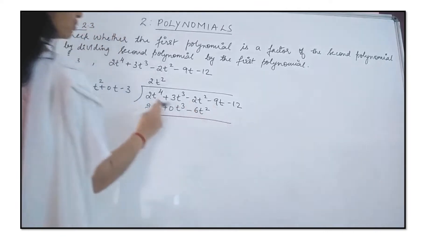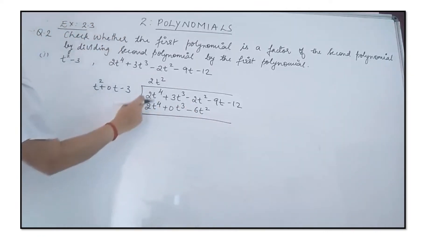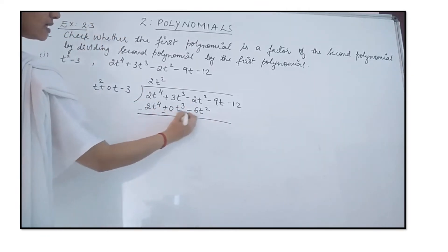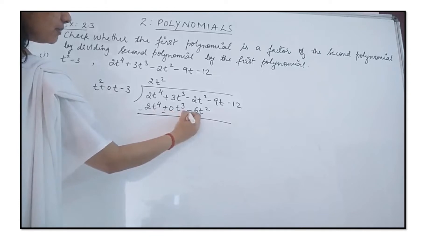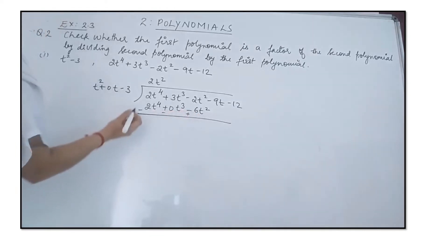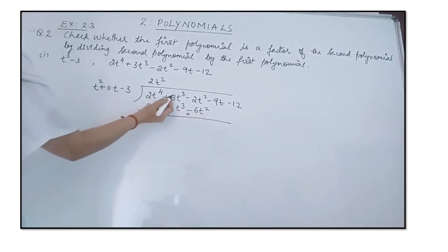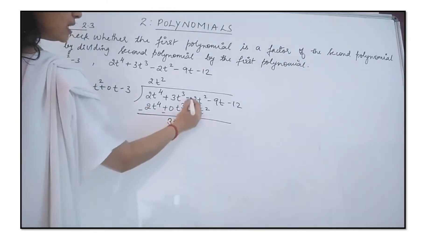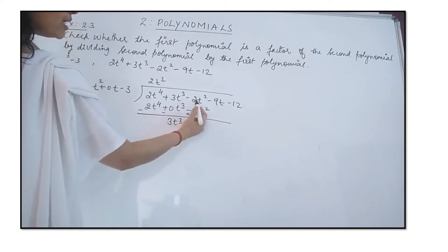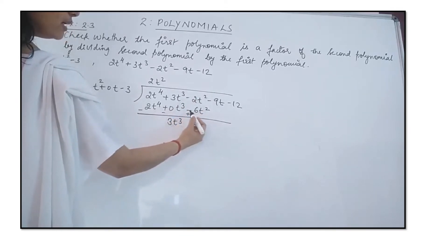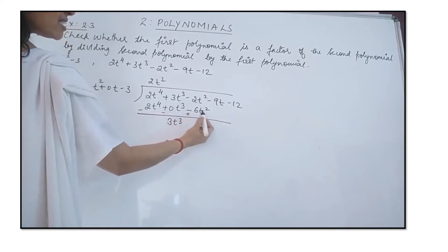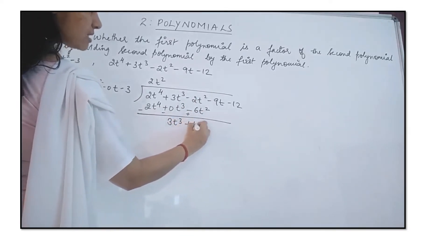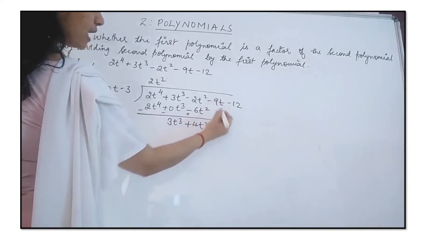Now we subtract. The sign changes to negative, making the subtracted terms negative and positive respectively. The 2t⁴ terms cancel to give 0. We get 3t³, and −2t² + 6t² gives +4t².